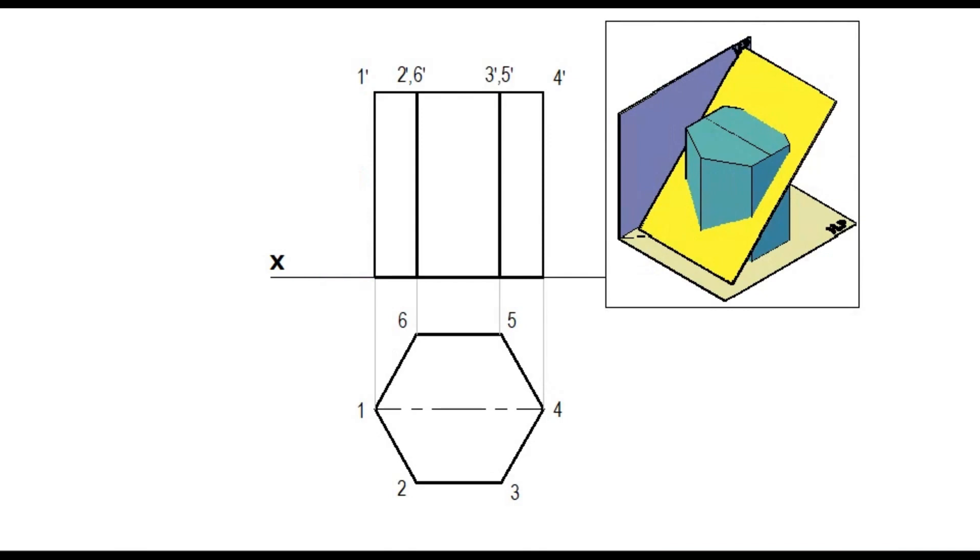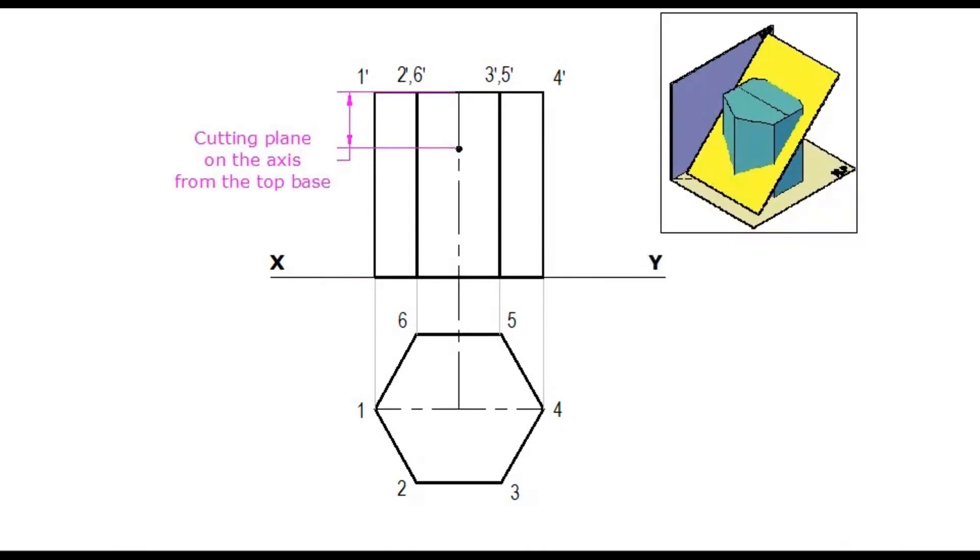Locate the cutting plane on the axis, that is by taking the distance from the top. Draw a horizontal reference line through the point. Then draw the cutting plane through this point at the given angle. Cutting plane is passing through the top base.